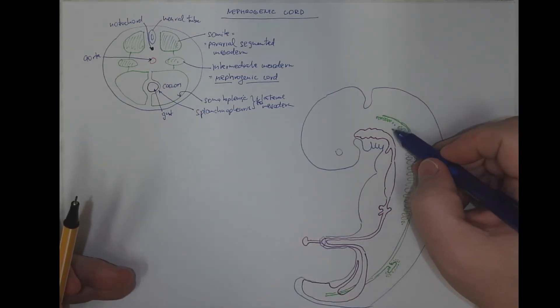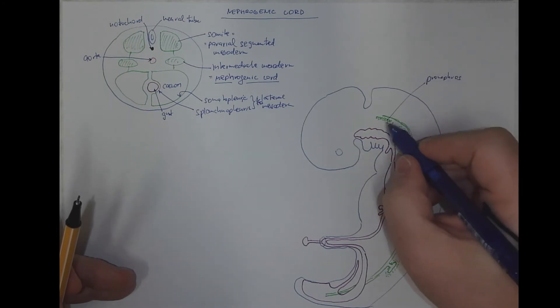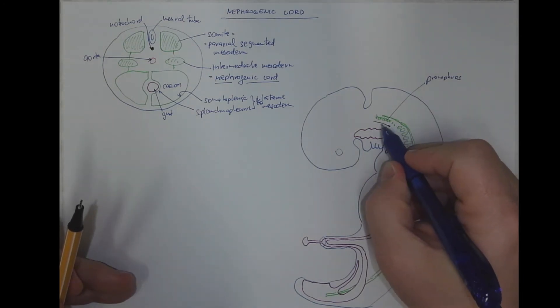This is the segmentation of the nephrogenic cord into pronephros in the cervical region. This is pronephros.